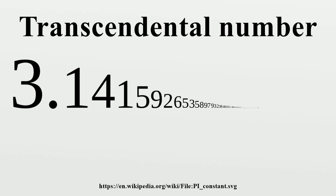Liouville showed that this number is what we now call a Liouville number, meaning it can be more closely approximated by rational numbers than can any irrational algebraic number. Liouville showed that all Liouville numbers are transcendental. The first number to be proven transcendental without having been specifically constructed for the purpose was e, by Charles Hermite in 1873.